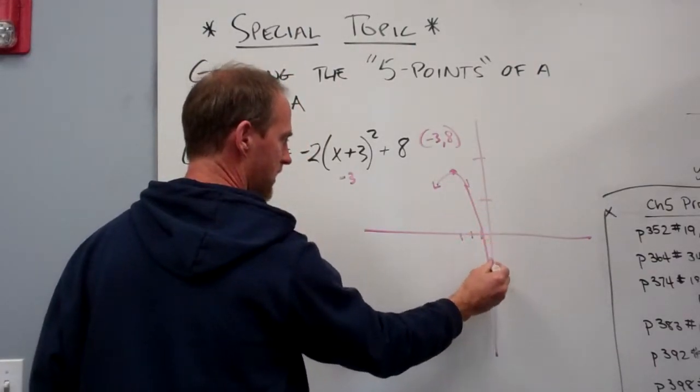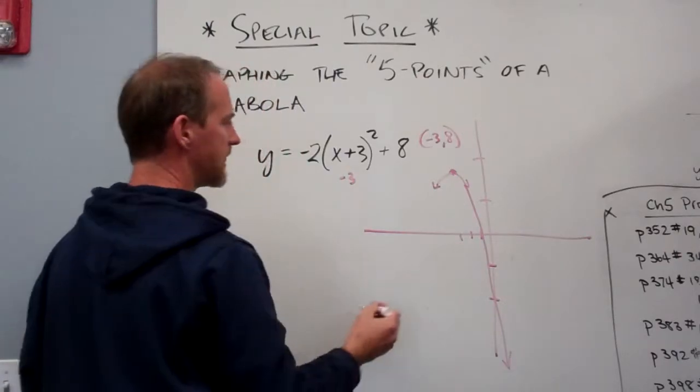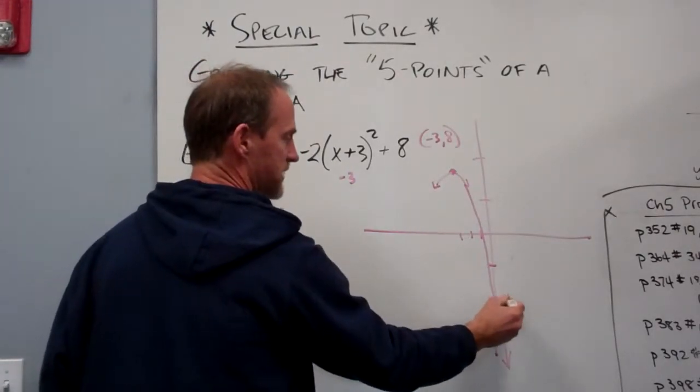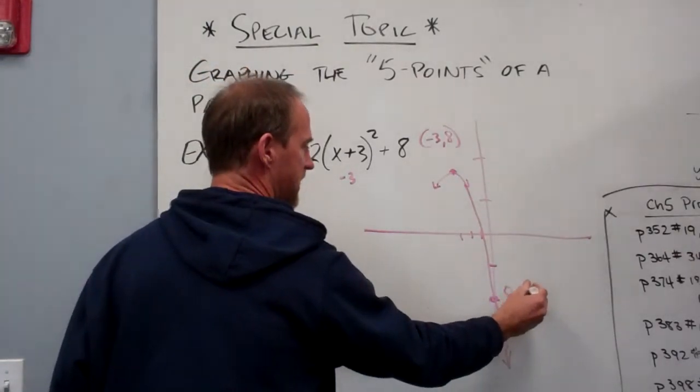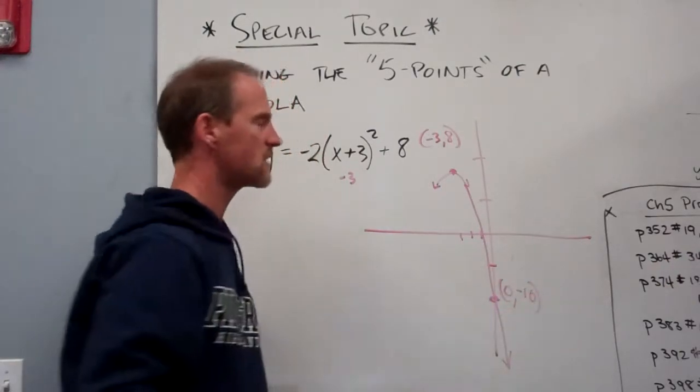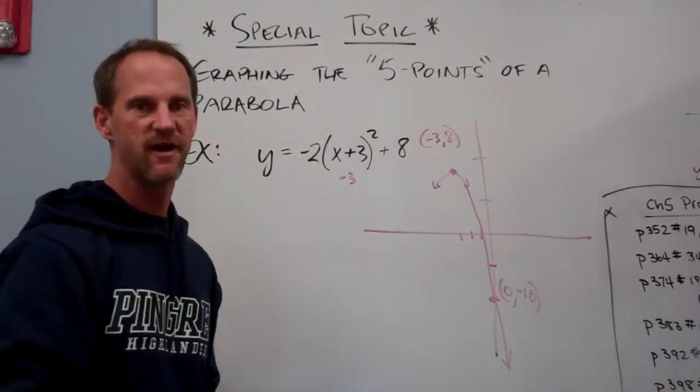This is going to go down and cross through right there, and we should label that 0, negative 10. So we've got two points out of our 5.